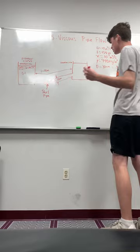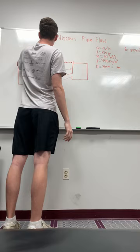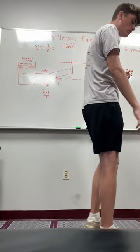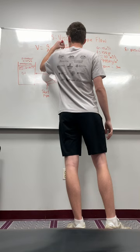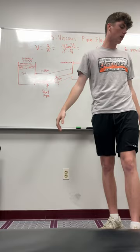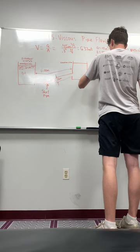So then the first step I took, first step you have to take, at least what I did, was I found the velocity. So V equals Q over A. I did 0.5 meters cubed per second over diameter squared times pi over 4, and that gives you 6.37 meters per second. So we have velocity now.